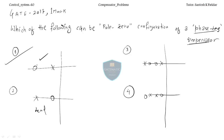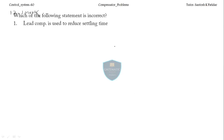Let's come to the second problem. Which of the following statements is incorrect? First: the lead compensator is used to reduce settling time. Yes, we have seen that the lead compensator increases the bandwidth, decreases the rise time, and decreases the settling time — the system will settle fast. So the first statement is correct.